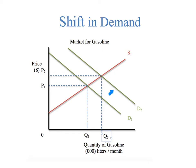Let's take the example of an increase in income for consumers on the market for gasoline, which is a normal good. When income increases, there will be an increase in the demand for gasoline, and the demand curve for gasoline will shift from D1 outward to D2, ceteris paribus, as shown here in this diagram.